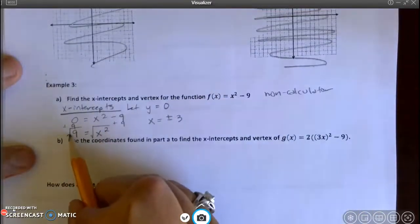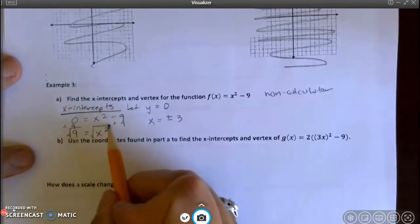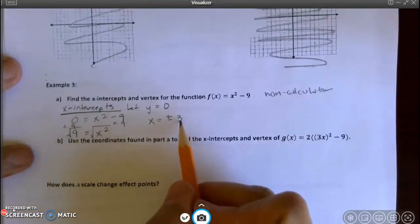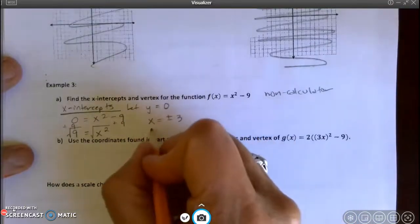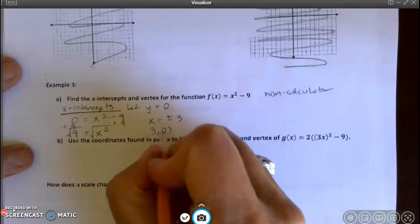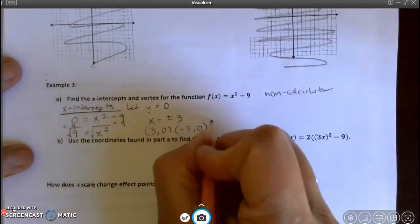Remember, if you insert that square root, you don't know whether I want the positive or negative root. So you have to give me both. Therefore, the x-intercepts are positive 3, 0, and negative 3, 0.